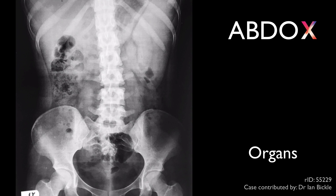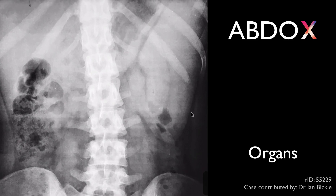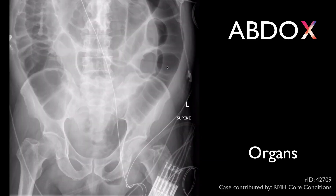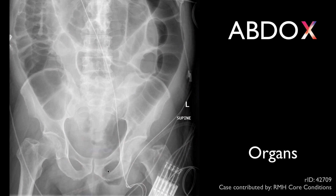O is for organs and soft tissues. The outline of the liver, kidneys, and spleen is usually visible, and organomegaly, such as this enlarged spleen, may be detected. Examine the lung bases and inguinal regions carefully. This gas in the left inguinal region indicates an inguinal hernia causing bowel obstruction.